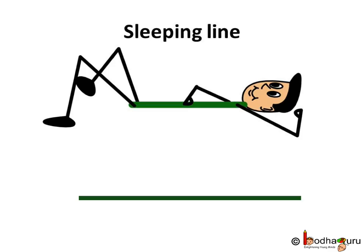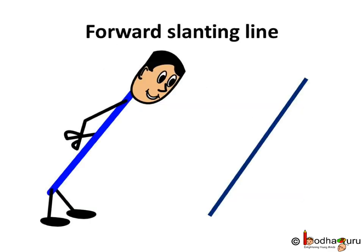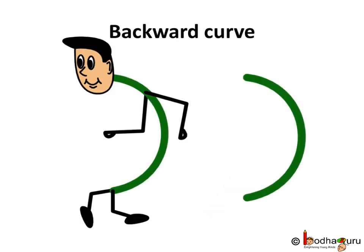Remember the sleeping line and the slanting line that bent in forward direction? And do you remember the curve, looking back, the backward curve? Let us use all of them to make a 2.